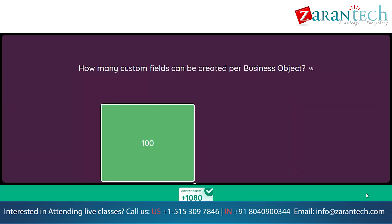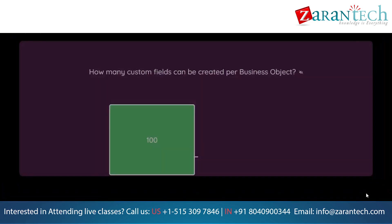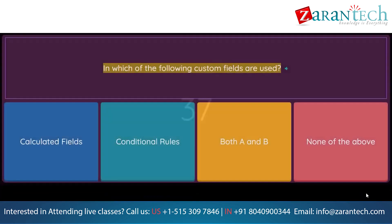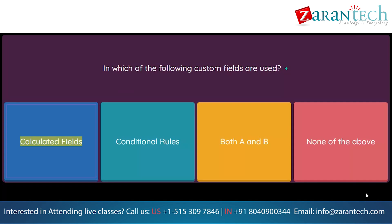In which of the following are custom fields used? Option 1: Calculated fields. Option 2: Conditional rules. Option 3: Both A and B. Option 4: None of the above.